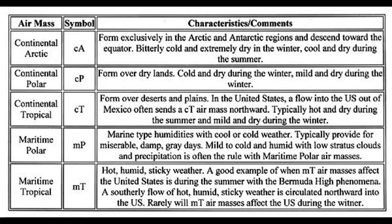Continental Polar forms over dry lands; it is cold and dry during the winter and mild and dry during the summer. Continental Tropical forms over deserts and plains. In the United States, a flow out of Mexico often sends continental tropical air masses northward.